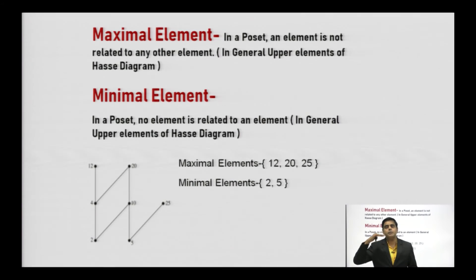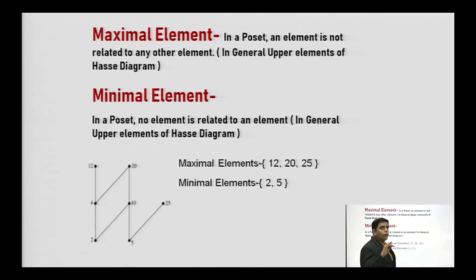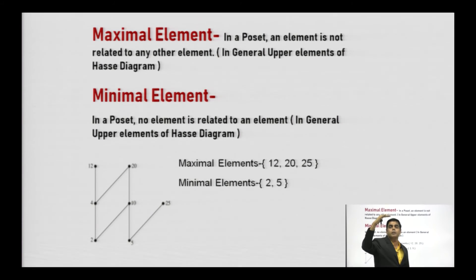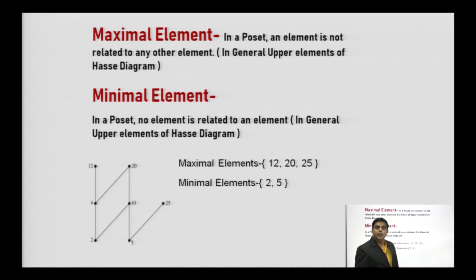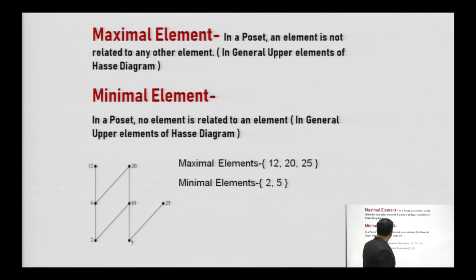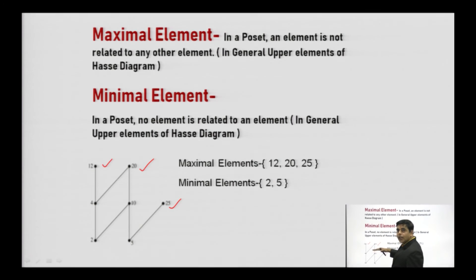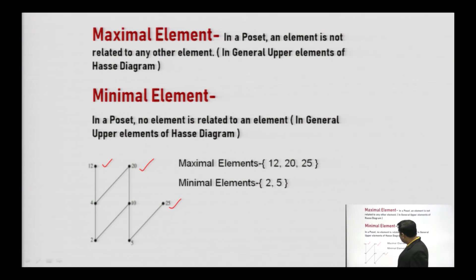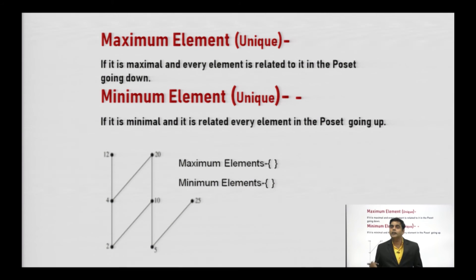This diagram has some special elements: maximal elements and minimal elements. The maximal element is generally found at the top of the Hasse diagram. Its definition is: in a poset, an element that is not related to any other element above it. The element at the top level with no element above it is the maximal element. Similarly, the element at the bottom level with no element below it is the minimal element.